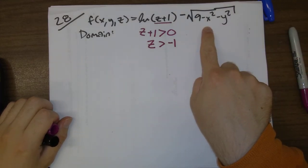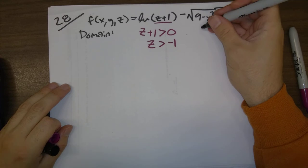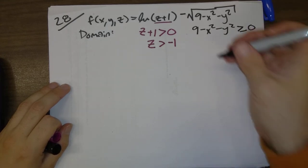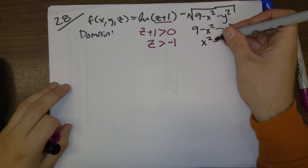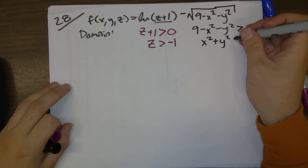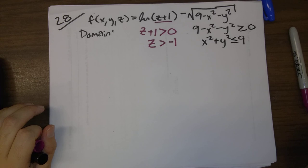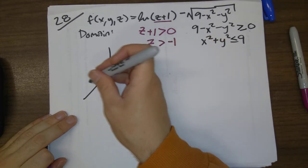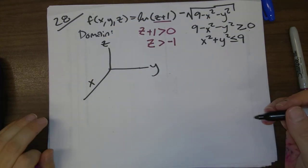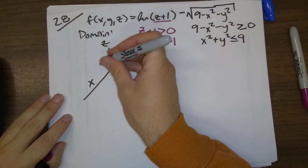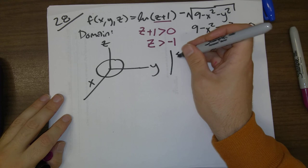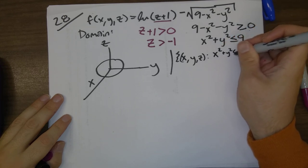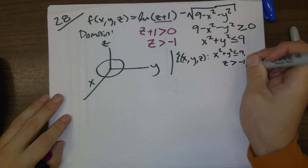Then over here, we want what's under the square root to be non-negative. We want 9 minus x squared minus y squared to be non-negative, so x squared plus y squared less than or equal to 9. That's everything inside a circle of radius 3. Formally, it's the set of all points x, y, z such that x squared plus y squared is less than or equal to 9 and z is at least minus 1.